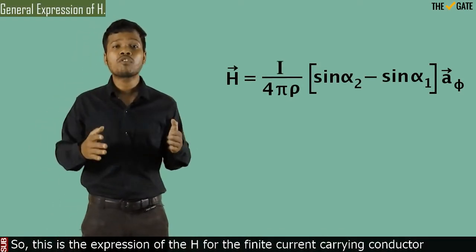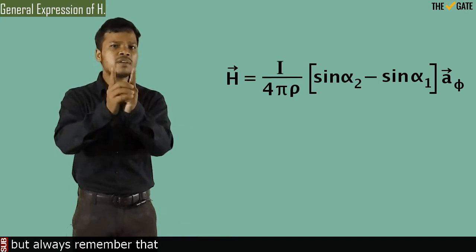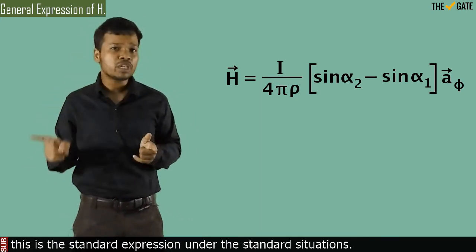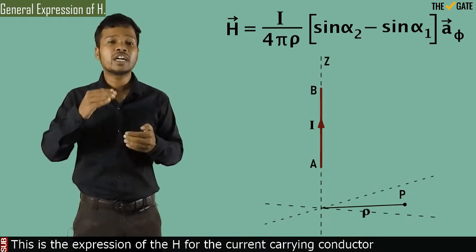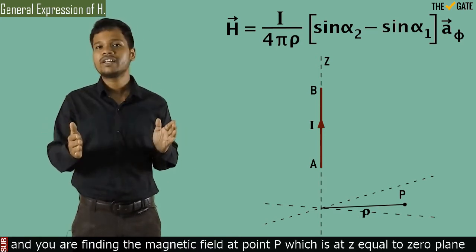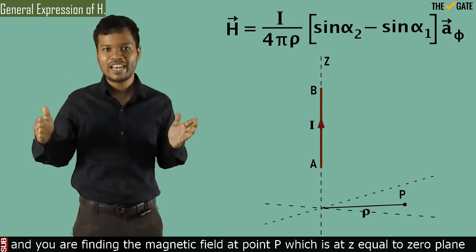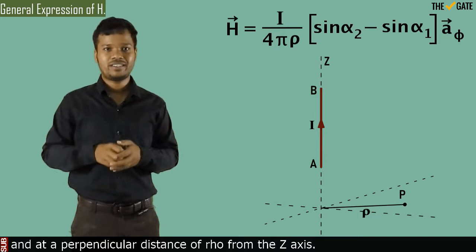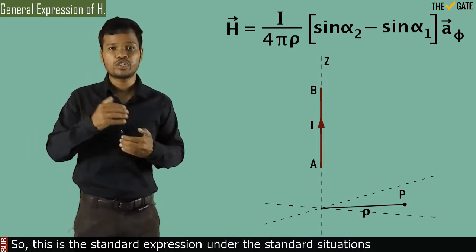This is the expression of H for the finite current-carrying conductor — the standard expression under standard situations. This is the expression of H for a current-carrying conductor placed along the Z-axis, where you are finding the magnetic field at point P which is at the z = 0 plane and at a perpendicular distance rho from the Z-axis. This is the standard expression under the standard situations.